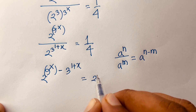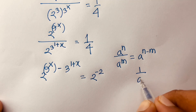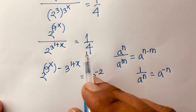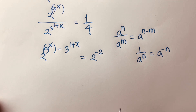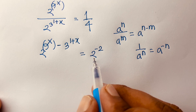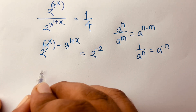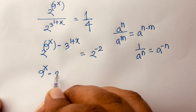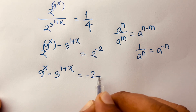It will be 2 to the power minus 2, because 1 over a^n equals a^(−n), and here 4 is 2 squared, so 1 over 4 equals 2 to the power minus 2. Since the bases are the same, the exponents must be equal, so it will be 9^x minus 3^(1+x) is equal to minus 2.